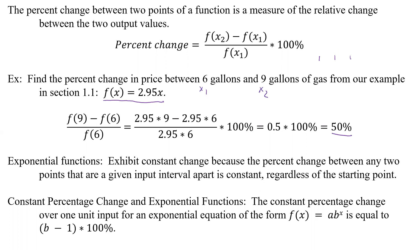Now the constant percentage change and exponential functions. So the constant percentage change over one unit input for an exponential equation when it's given in the form f of x equals a b to the x is equal to taking just that b part minus 1 times 100%. So when we had it with any function, basically, we took f of x2 minus f of x1 divided by f of x1. But here the constant percent change because it is constant is just that b minus 1 times 100%.